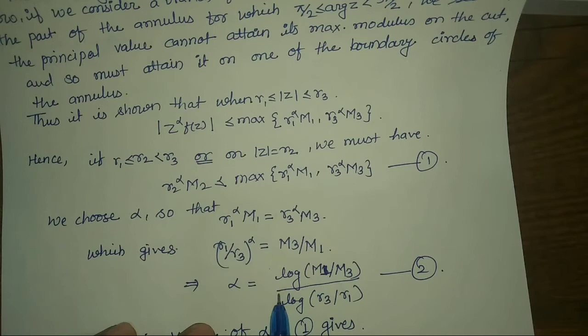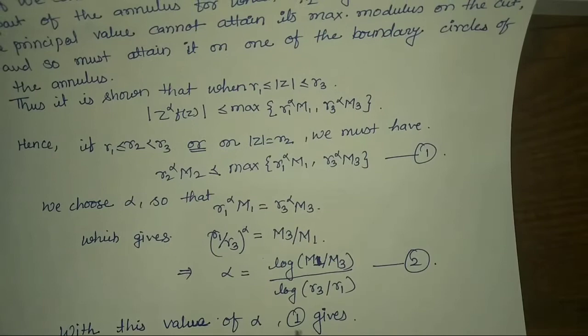Taking logarithms, we can write alpha equals log(M1/M3) divided by log(R3/R1). Suppose this is equation number 2.